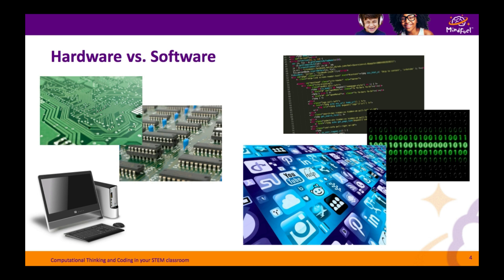Let's start by looking at technology. Technology is made up of two components: the hardware and the software. The hardware is anything that you would be able to physically touch — this includes the motherboard and other circuit boards and their components, the screen, the keyboard, and the mouse. The software is the digital computer code that exists in the memory of the computer. Software can take many forms: an operating system such as Windows, programs such as Microsoft Word or Google Chrome, computer games, or other applications.